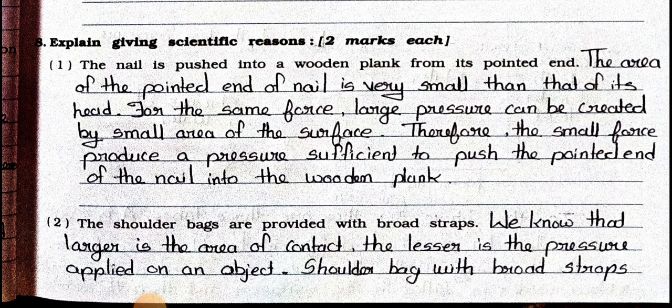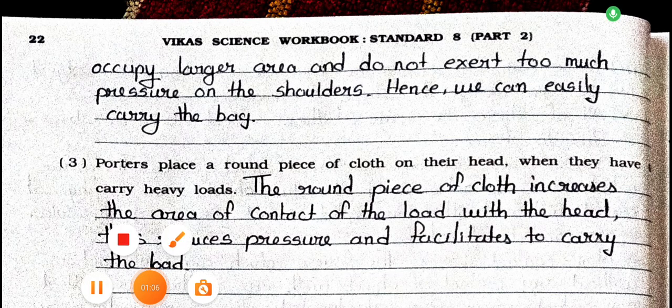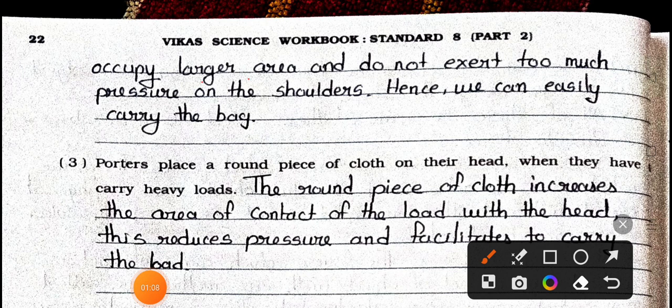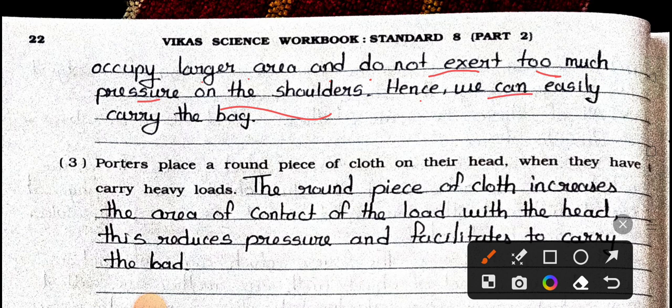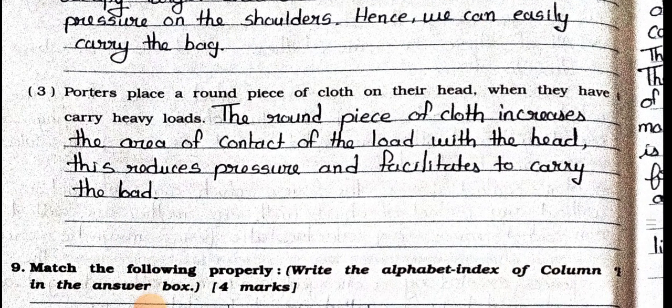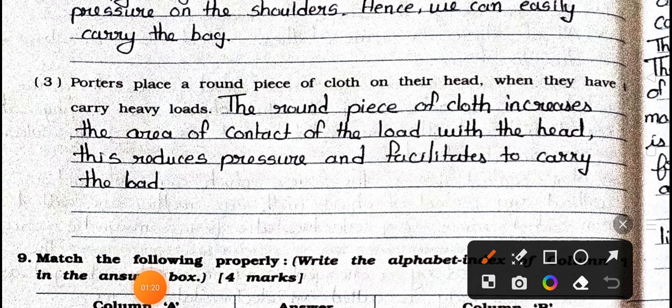Question 2: The soldier bags are provided with broad straps. Answer: We know that larger is the area of contact, the lesser is the pressure applied on an object. Shoulder bags with broad straps occupy larger area and do not exert too much pressure on the soldiers, hence we can easily carry the bag.